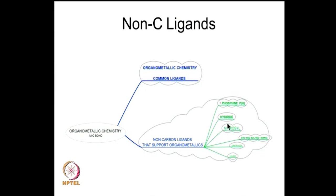Metal hydride chemistry, metal nitrosyls, metal dinitrogen chemistry, and metal halides are all important in organometallic chemistry. Although the chemistry may not happen at the metal-carbon center, these are good supporting ligands. I am calling them ligands that support organometallics. Today we will talk about phosphorous(III) ligands.